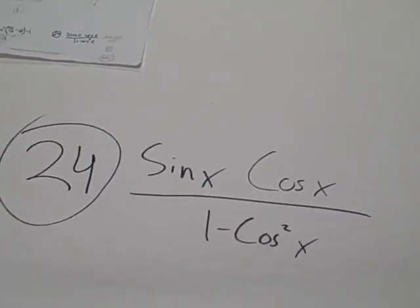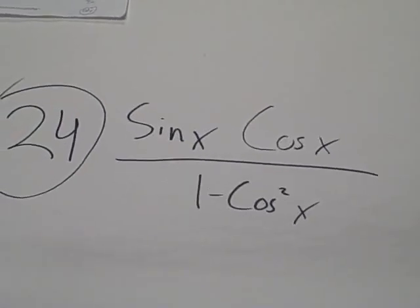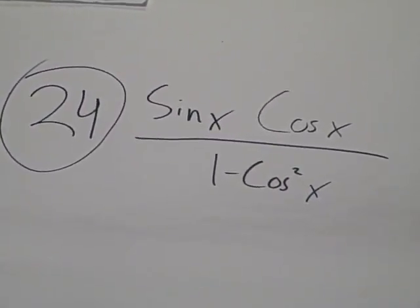Alright, we've got number 24. Number 24 is sine x times cosine x over 1 minus cosine squared x.